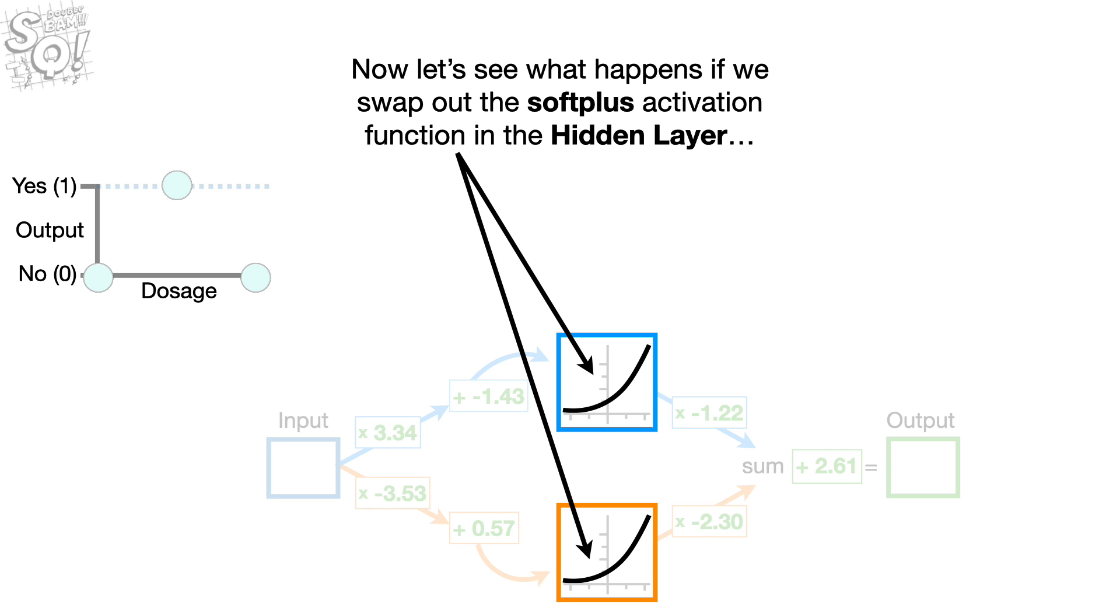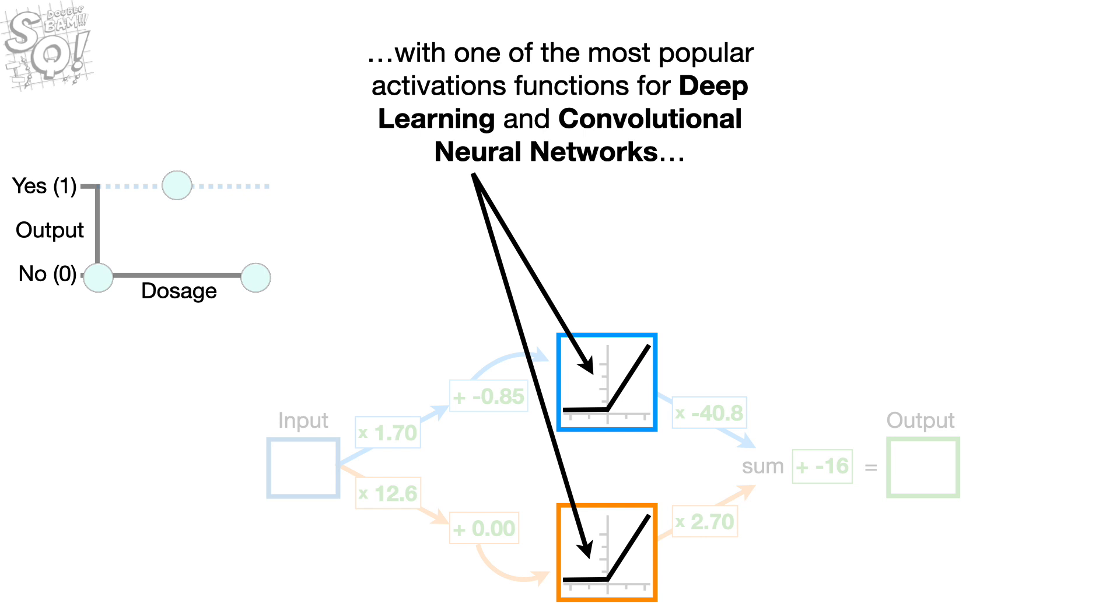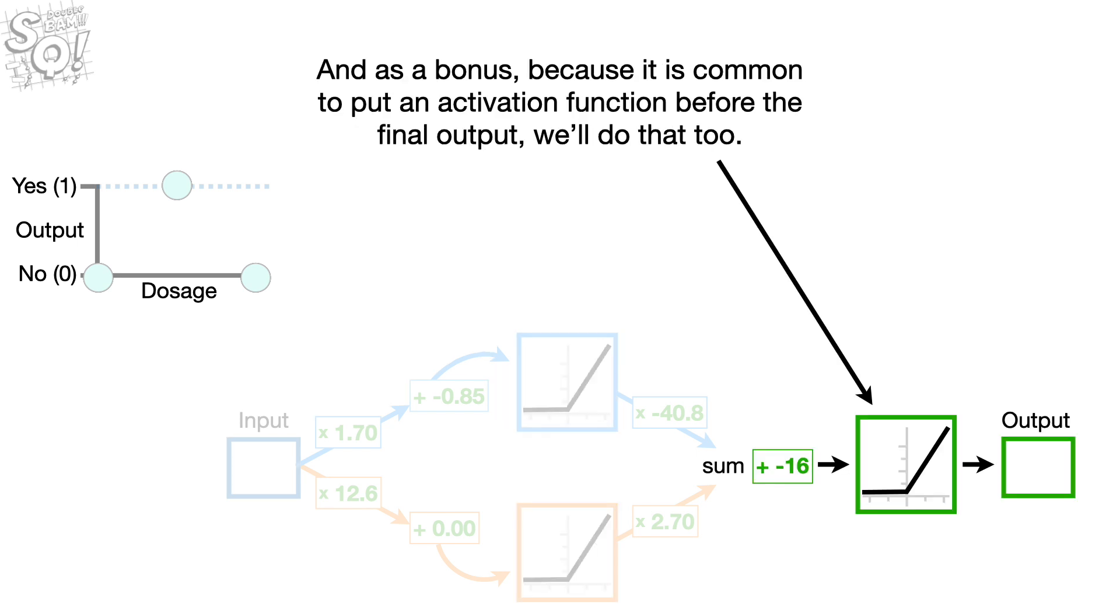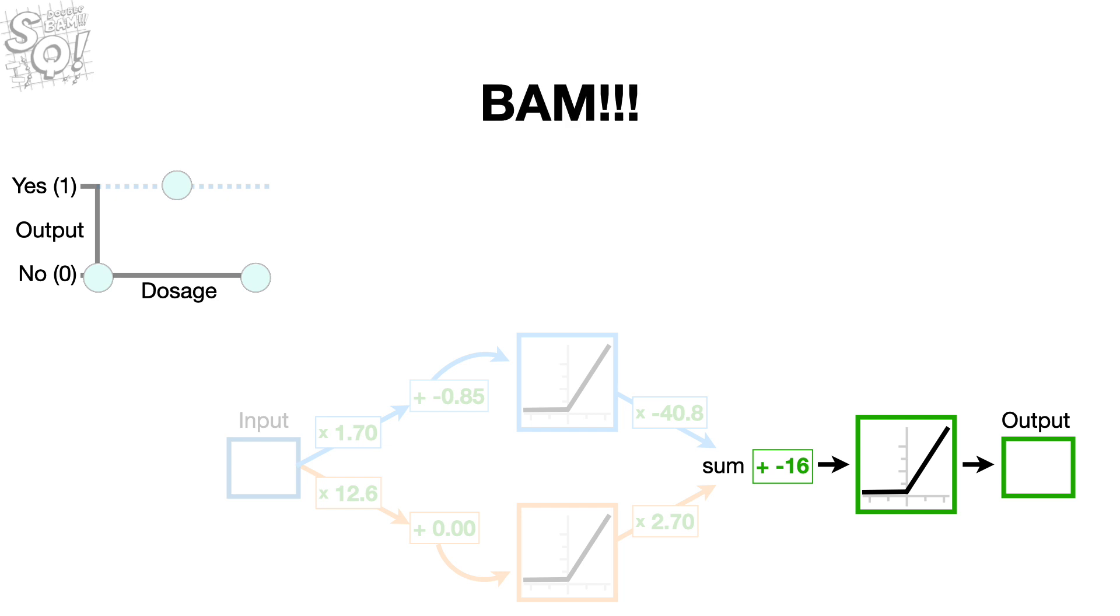Now let's see what happens if we swap out the soft plus activation function in the hidden layer with one of the most popular activation functions for deep learning and convolutional neural networks, the ReLU activation function, which is short for Rectified Linear Unit and sounds like a robot. And, as a bonus, because it is common to put an activation function before the final output, we'll do that too. Bam.